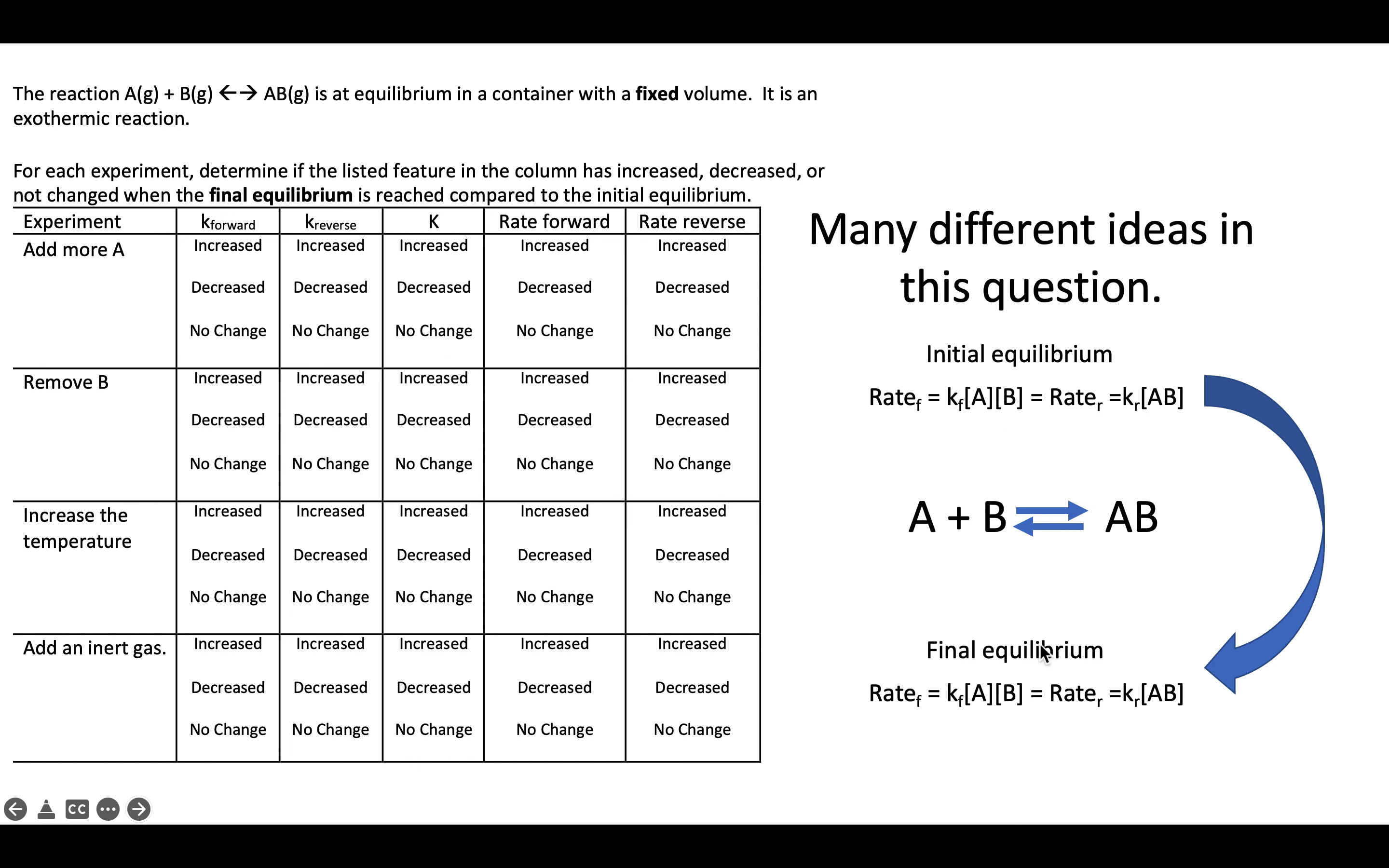For the final equilibrium, we're again having the overall rate forward equal the overall rate reverse. So if we were to look at a few of these different features, the rate constants themselves, the only thing that changes that is the temperature. So in all the other cases, no change. The large k value, well that's a ratio of the small k's. So if the rate constants themselves are not changing, the equilibrium constant is not changing.